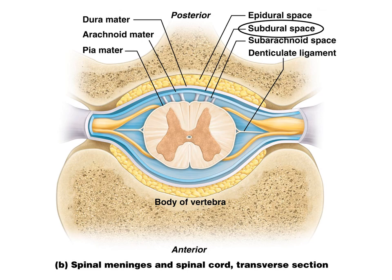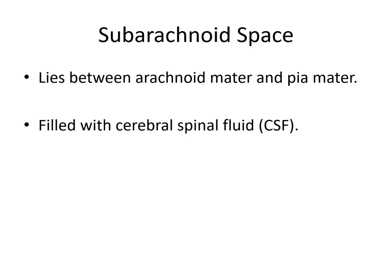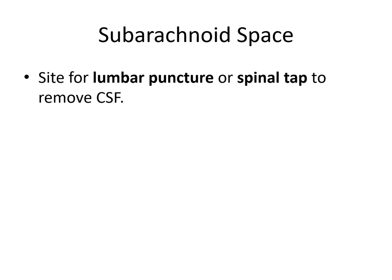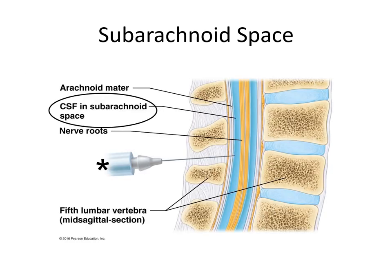The subarachnoid space lies between the arachnoid mater and the pia mater, and it's filled with cerebral spinal fluid (CSF). The central nervous system is surrounded and bathed in this cerebral spinal fluid, which also flows through it. The subarachnoid space is the site for a lumbar puncture or spinal tap if you want to take a sample of cerebral spinal fluid, using a syringe inserted into that space.